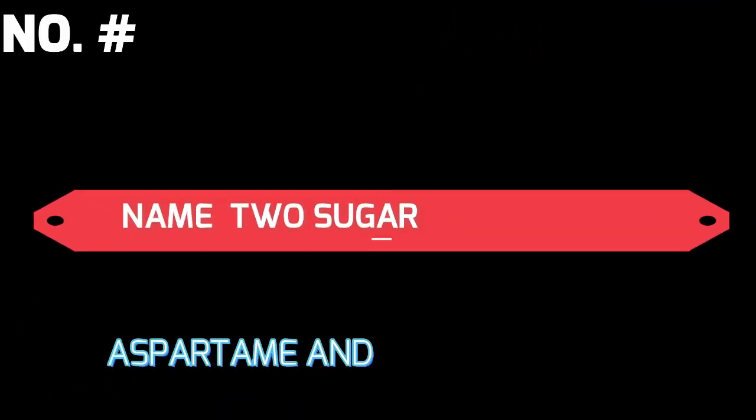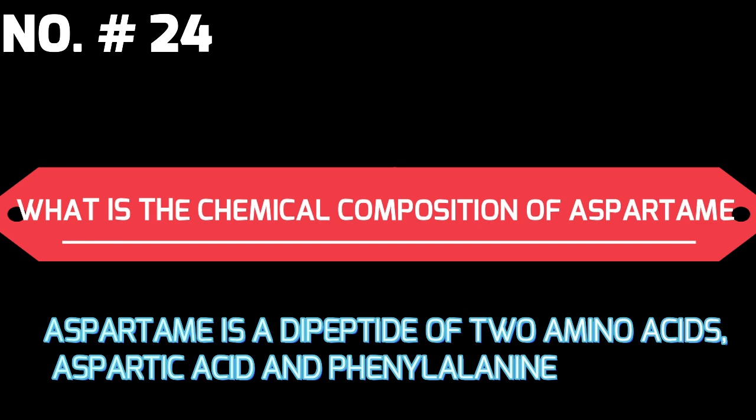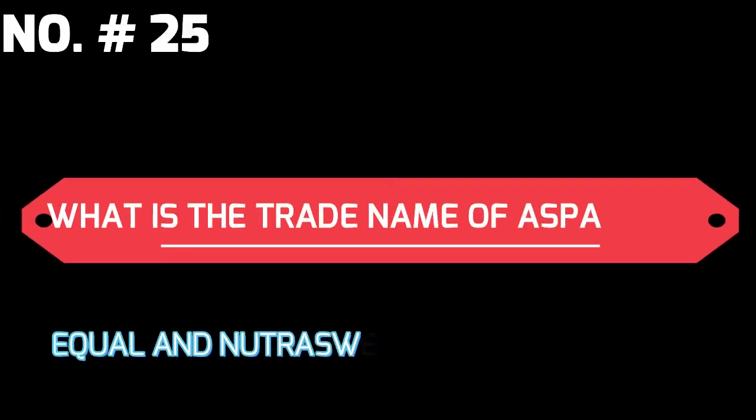Name two sugar substitutes. Answer: aspartame and saccharine. What is the chemical composition of aspartame? Aspartame is a dipeptide of two amino acids: aspartic acid and phenylalanine. What is the trade name of aspartame? Answer: Equal and NutraSweet.